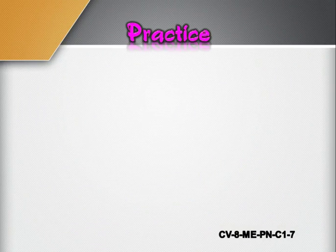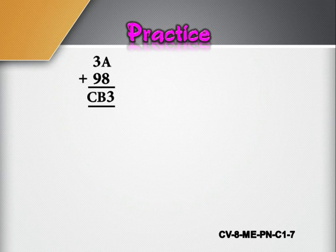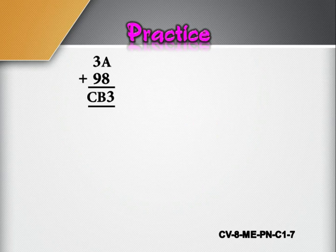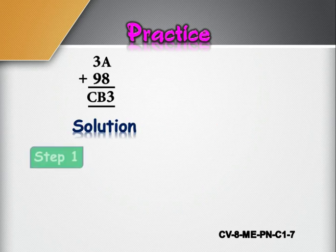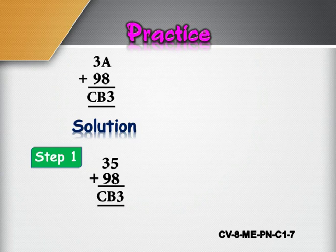Children, here is a practice problem for you. Find the value of A, B, and C in 3A plus 98 equals CB3. Step 1: Since A plus 8 gives 3 in the units place, A should be 5, giving 13 with carry 1. Then 1 plus 3 plus 9 equals 13. Hence A is 5, B is 3, and C is 1.